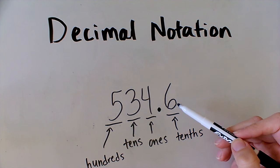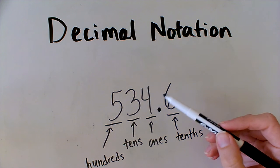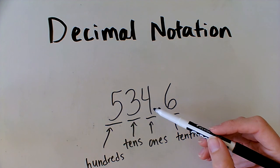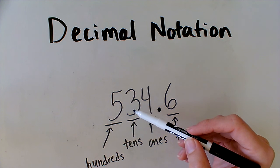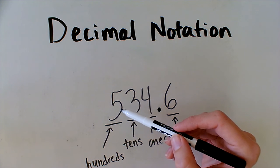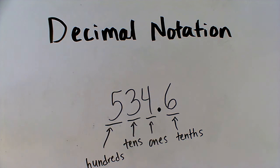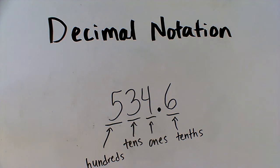Tenths are actually 10 times smaller than ones. 1 tenth is 10 times smaller than 1, in the same way that 1 is 10 times smaller than 10, 10 is 10 times smaller than 100, and 100 is 10 times smaller than 1,000. That's why it's called a base 10 system. So when we move into decimals, we're just getting smaller and smaller and smaller.